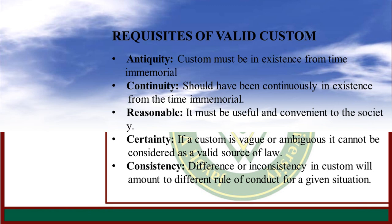Second, Continuity — the custom must have been in continuous existence and it should not be vague or indefinite. Its existence must be proved by clear and unambiguous evidence. Third, Reasonableness — a custom is reasonable if no good legal reason can be assigned against it. It is not that a custom will be admitted if reasonable, but that it will be admitted unless it is unreasonable.